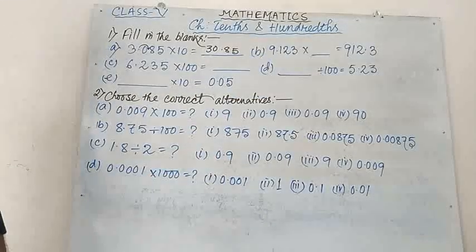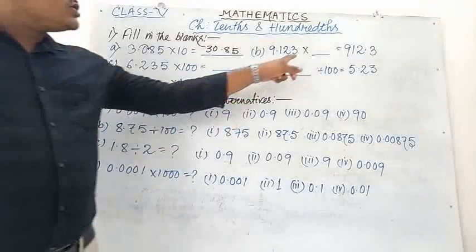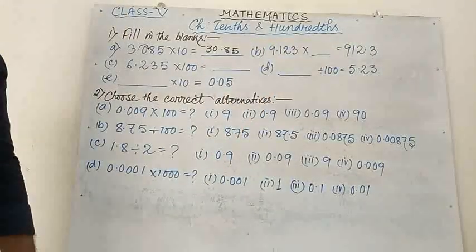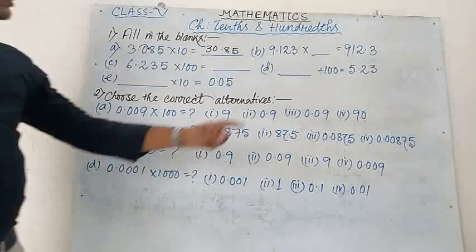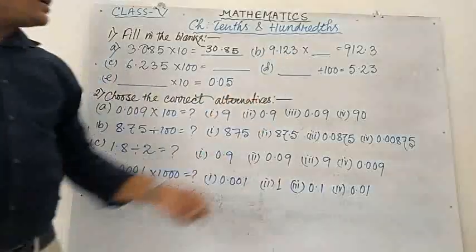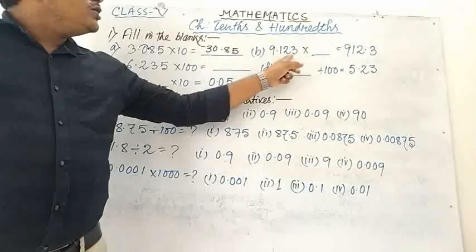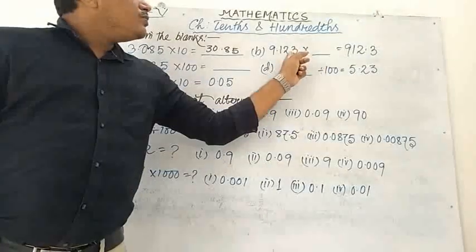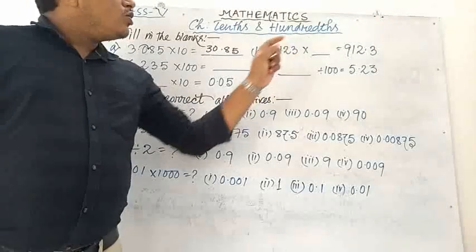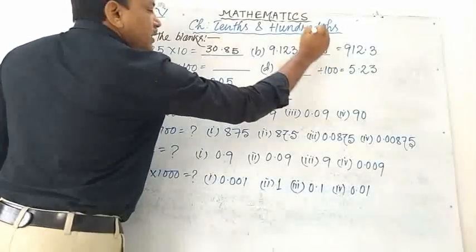Number B: 9.123 multiplied by dash equals to 912.3. We can see here the point is after 9 in the first number and after 2 in the result. So the point has shifted 2 digits from its current position to the right. So we have to multiply by 100.